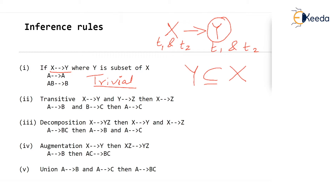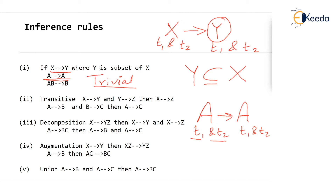As an example, somebody has given A determines A. Why write this dependency? What that means is: in two tuples T1 and T2, if the value of A is the same, then in those two tuples the value of A should be the same — but we are talking about A itself, so it has to be the same. Isn't this Y a subset of X? Yes — A is a subset of A, since every set is a subset of itself.